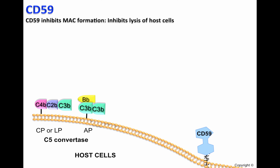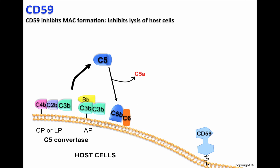These C5 convertases will cleave C5 in order to generate C5a, an important chemoattractant and pro-inflammatory molecule, and C5b, which will be recognized by C6 and C7, forming the complex C5b-C6-C7 that attaches to the cell surface of host cells. Later, C8 will recognize this complex and insert into the cell membrane of the host.